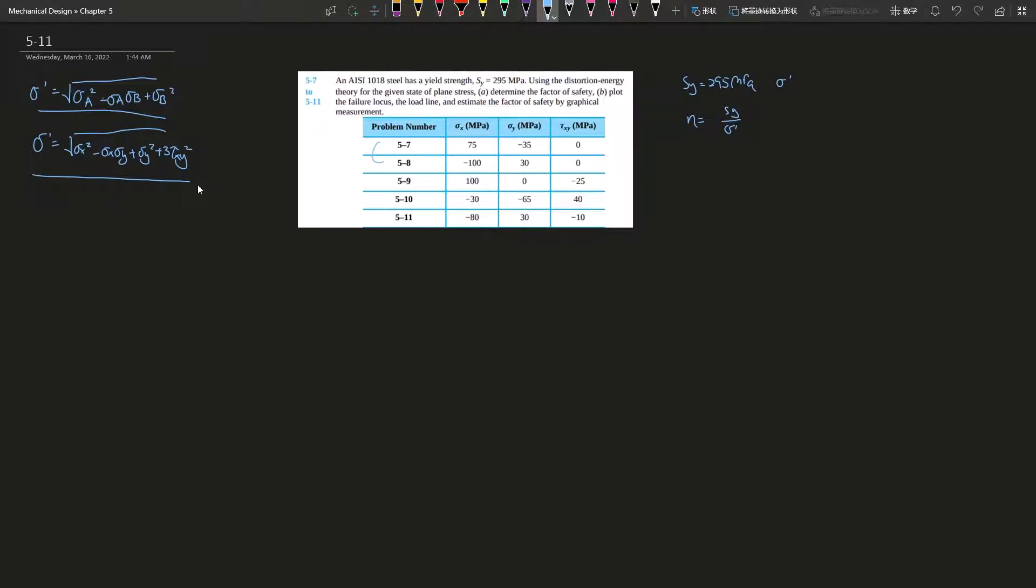This equation just allows you to have whatever you have at any state of the point. For example, on this Mohr's circle—that was a terrible circle but you get the point—on any point of the circle where you have certain stress x, stress y, and a shear, you can apply this equation.